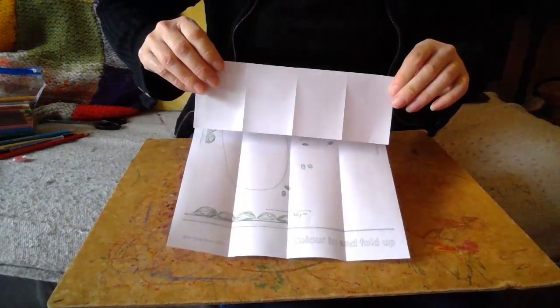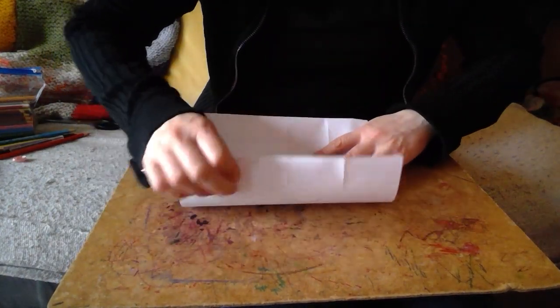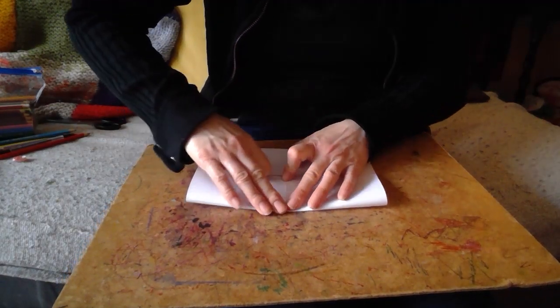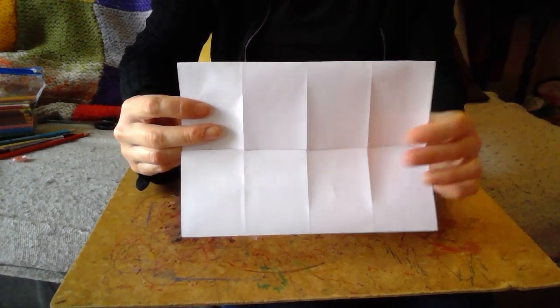What we're folding actually is a traditional Japanese box. The outside to the middle. Hopefully it's looking like this. And keep it closed.